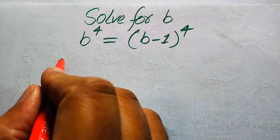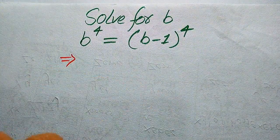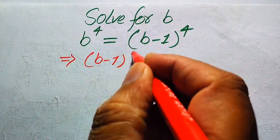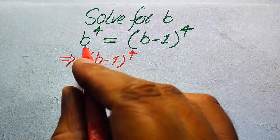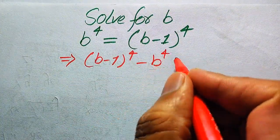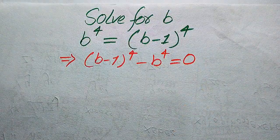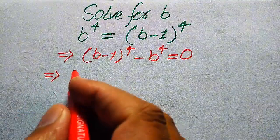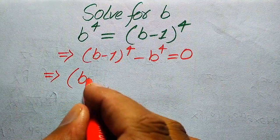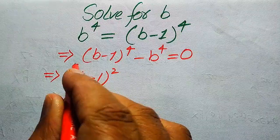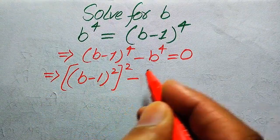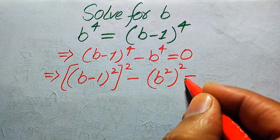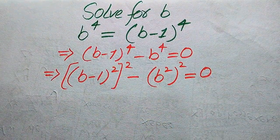The very first thing we are going to do is rewrite this equation. We need to move b to the power of 4 to the right hand side, and it becomes b minus 1 to the power of 4 as a positive term; when we move it to the right hand side it becomes negative, and this whole equation equals 0. So we rewrite b minus 1 to the power of 4 as (b minus 1)² whole squared, minus b² whole squared, equals 0.